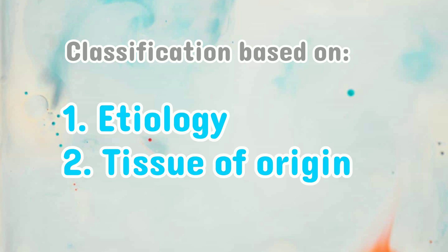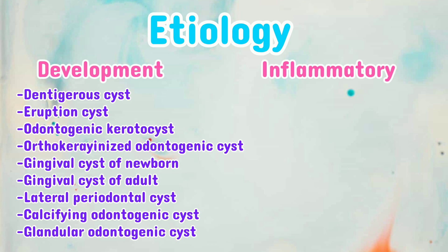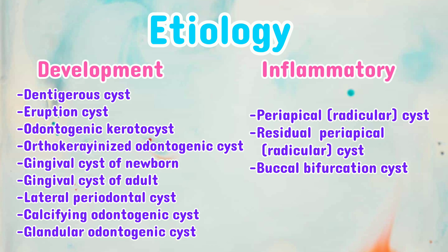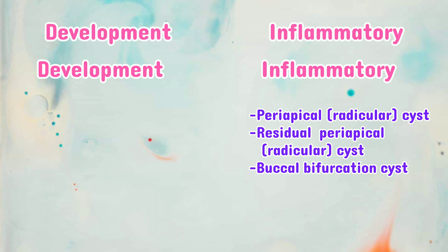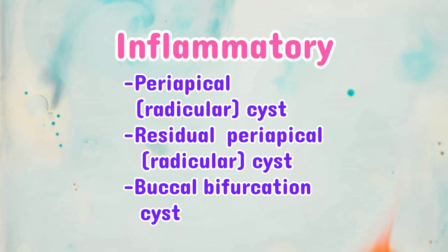We can classify odontogenic cysts based on etiology and tissue of origin. Under etiology, it is further subdivided into developmental and inflammatory. Under developmental, we have dentigerous cysts, eruption cysts, odontogenic keratocysts, orthokeratinized odontogenic cysts, gingival cysts of newborn, gingival cysts of adult, lateral periodontal cysts, calcifying odontogenic cysts, and glandular odontogenic cysts. Inflammatory includes periapical, residual, and buccal bifurcation cysts.